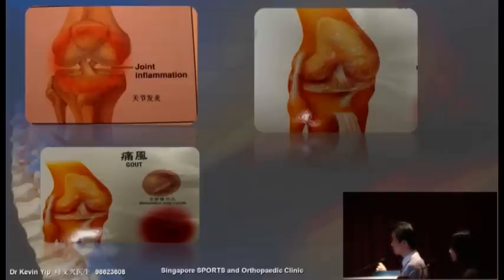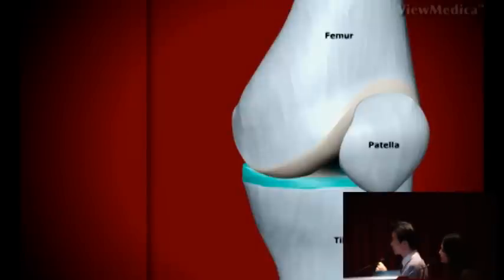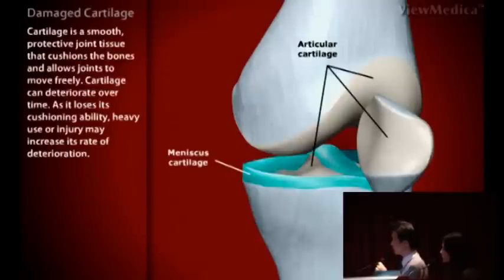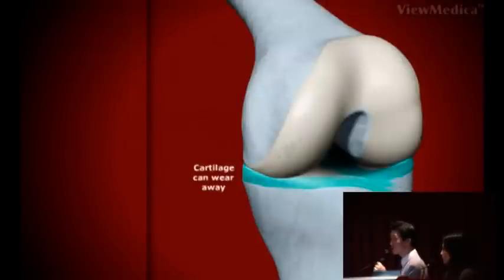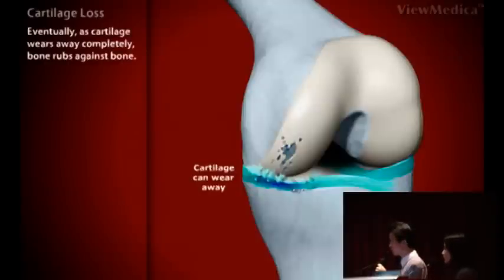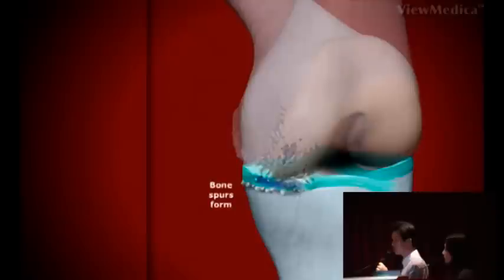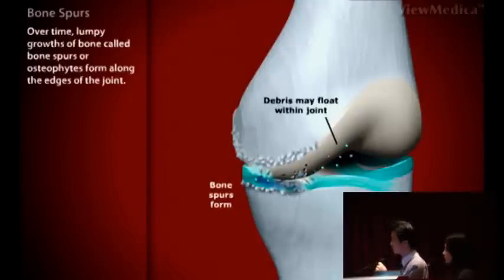To understand this condition, we need to note the anatomy of the knee. The knee joints are covered with cartilage, and this is the kneecap. With time, the cartilage can slowly get worn away, resulting in ulcer formation, together with the development of osteophytes or bone spurs around the edges of the bone. There may also be release of debris and loose bodies that float into the joint.